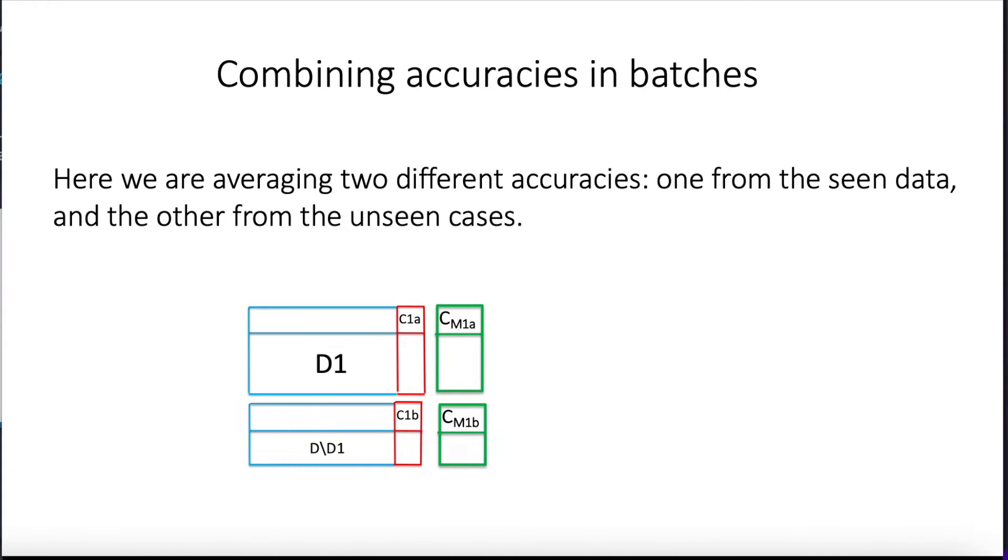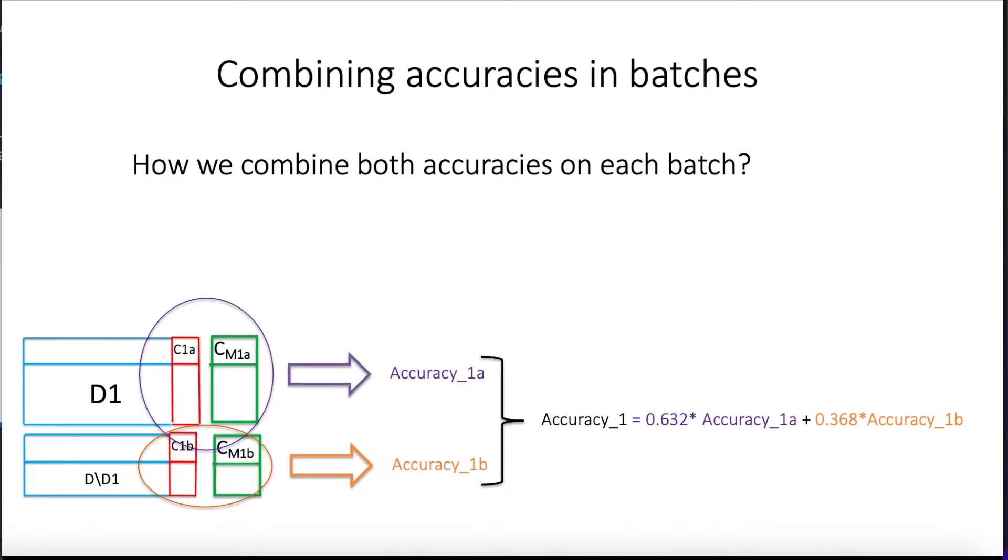So the question is how we combine the results from these two different sets, from the sets that were seen by the classifier and the unseen ones. And the idea is we're going to get one accuracy here by comparing how close was the classification made with the model versus the real one, and the same thing for the unseen cases. And we're going to obtain two different accuracies. The same thing for D2, the same thing for round 3, and if we continue, we're going to do the same thing for the round B. So we're going to obtain two accuracies on every round. How we combine them?